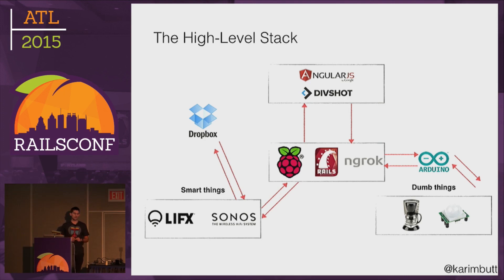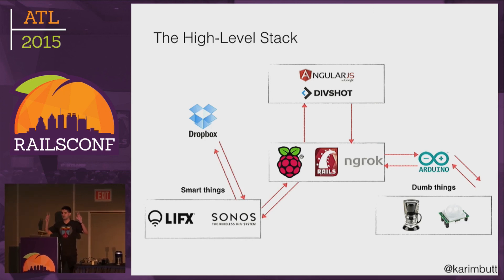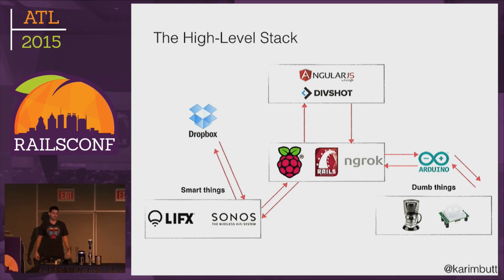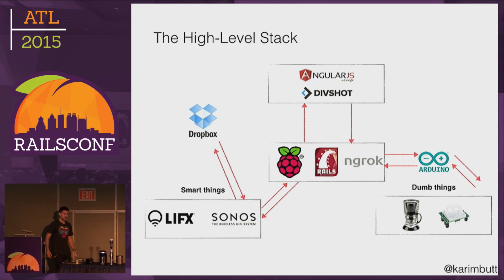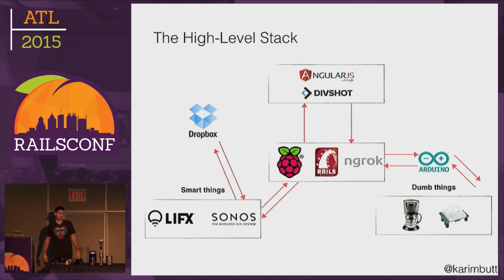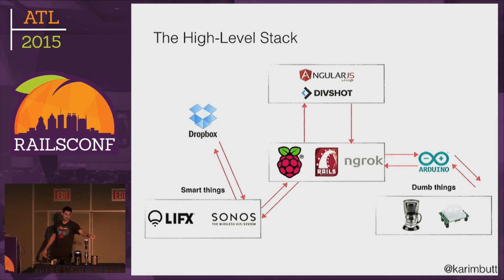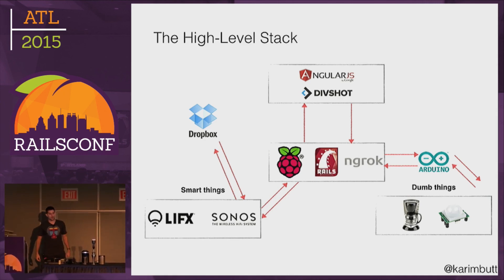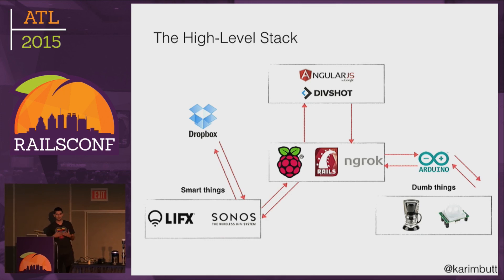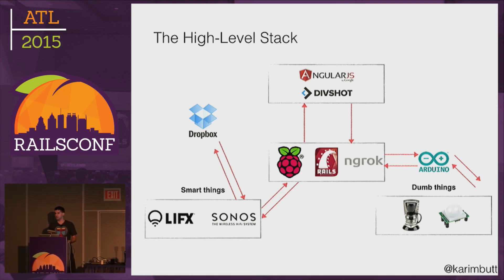The Rails app connects both smart objects and dumb objects. Smart objects are ones already connected to the Internet — you pay a huge premium for them right now. A regular light bulb is about a dollar; the connected LIFX light bulb is a hundred dollars — a hundred times the premium. The Rails app connects to the LIFX light bulb and the Sonos, which are both smart. The Sonos actually works with Dropbox — I'm sending it files from Dropbox on the cloud for portability, so it doesn't depend on files on my local machine.